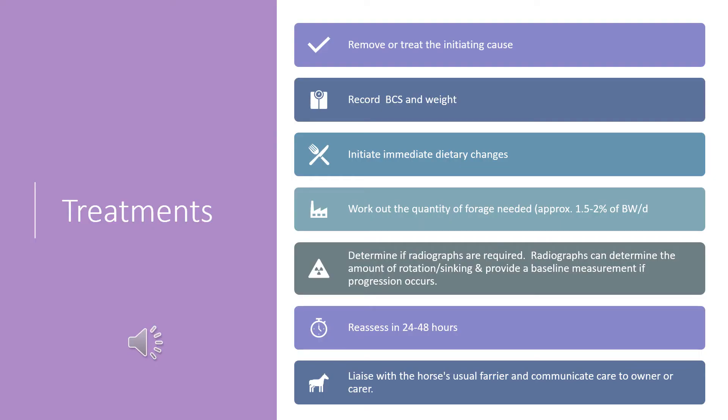To treat laminitis, first remove or treat the initiating cause of the disease. Get an accurate body condition score and weight at the start of treatment to track progression. Initiate immediate dietary changes: remove treats such as carrots and apples, concentrate the feed, and calculate the required quantity of forage for the animal. Have the owner weigh and soak the feed in cold water for 8 to 16 hours before feeding. Determine if radiographs are required, especially when rotation or sinking of P3 is suspected.